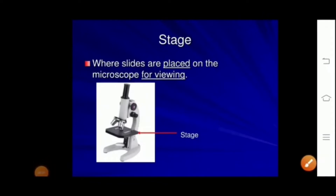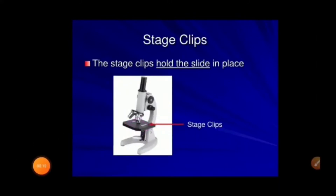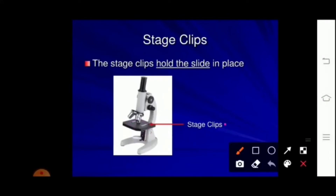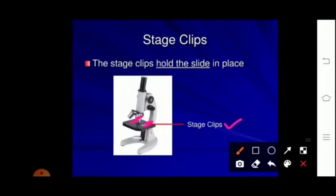Then comes the stage. This is the black, flat surface called the stage of the microscope, where a slide or any object can be placed on the microscope for viewing. When we keep the slide on the stage, there are two clips — one clip here and one clip here — which help to hold the slide so it does not move around.